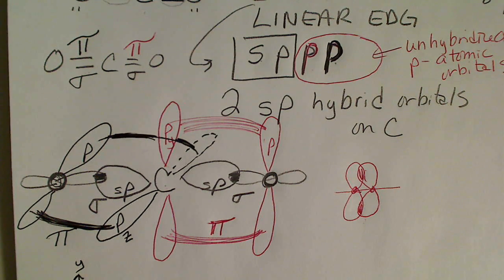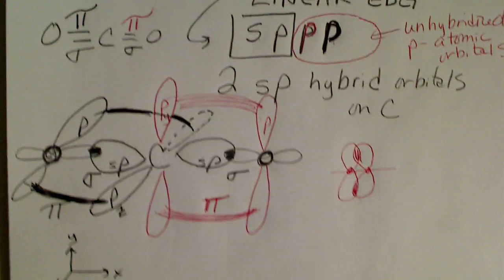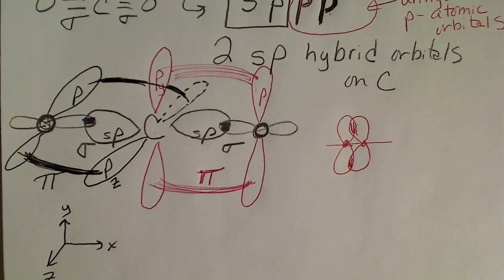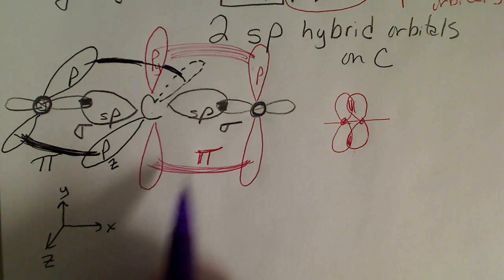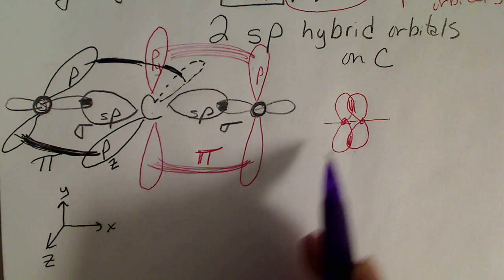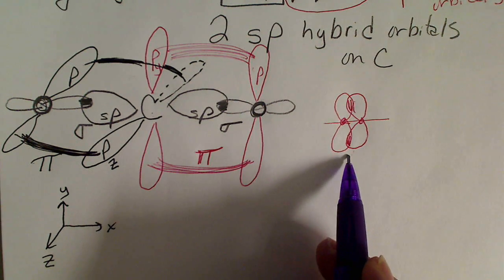Textbooks have a much better picture of this with shading that makes it look more three-dimensional, but any time we have multiple bonding there is going to be this P overlap, and we call that pi bonding.